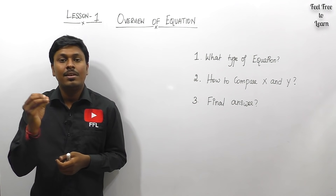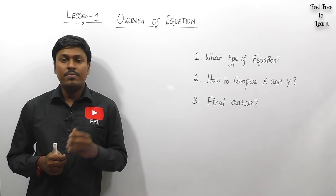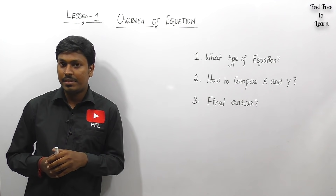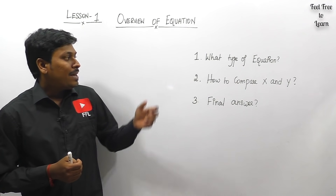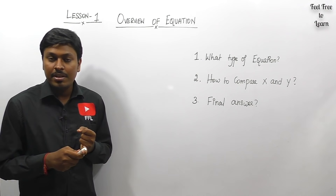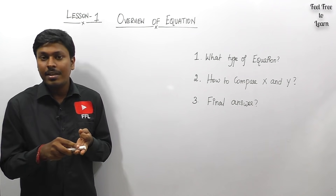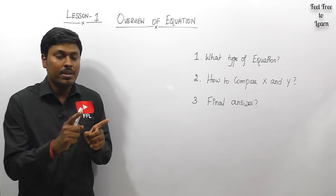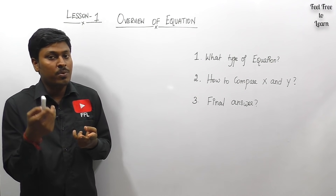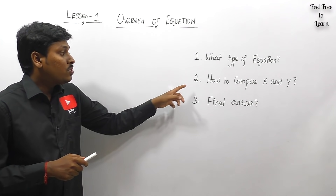Practice a minimum of 25 equations based on each lesson. Before solving an equation, you should know the basic things you need to identify. First, by seeing an equation, you should determine what type of equation it is — whether it is a simultaneous equation, a homogeneous equation, or a quadratic equation. That is step number one. Step number two is to find the value of x and y.